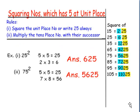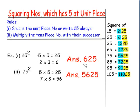Friends, before understanding the square of all the numbers, let us know one basic thing: how to square numbers which end with 5. Suppose 25. 5 times 5 is 25 — we write 25 first. Then 1 more than the tens place: 2 plus 1 is 3, and 2 into 3 is 6. So 25 square is 625.